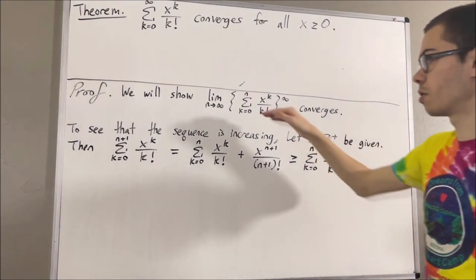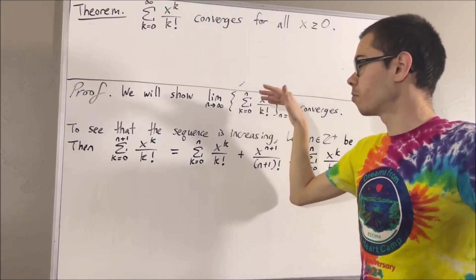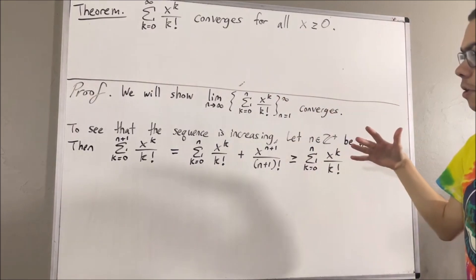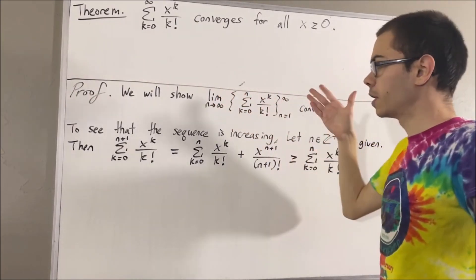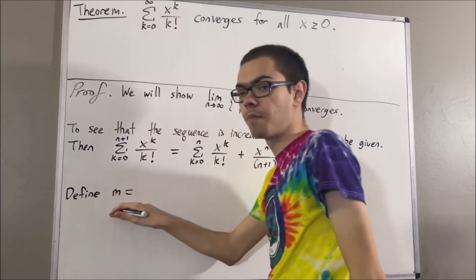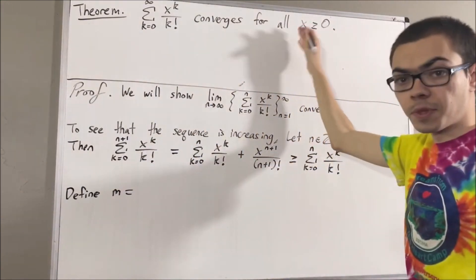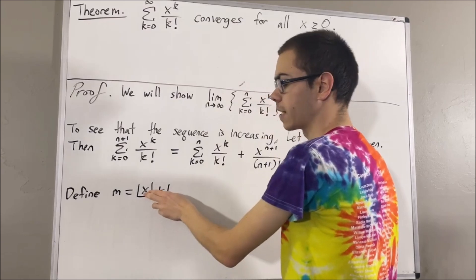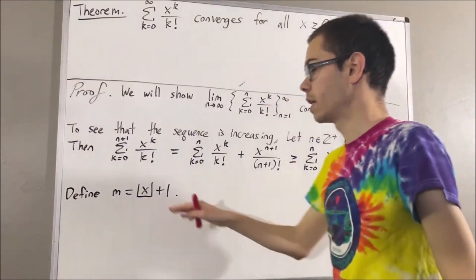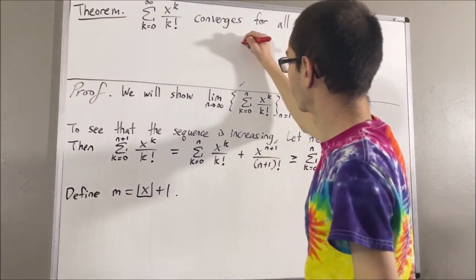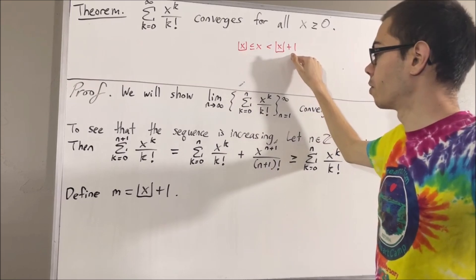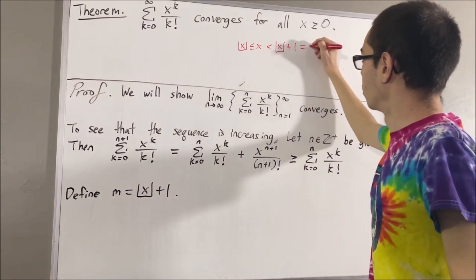Now, let's show that our sequence is bounded above. What does it mean for our sequence to be bounded above? It means that every term of our sequence is less than or equal to some fixed number. Here's how we're going to do it. Let's define the quantity m to be the floor of x plus 1. The floor of x is defined as the greatest integer less than or equal to x, and a property the floor satisfies is: floor of x is less than or equal to x, which is strictly less than the floor of x plus 1. So since the floor of x plus 1 equals m, we have that x is less than m.